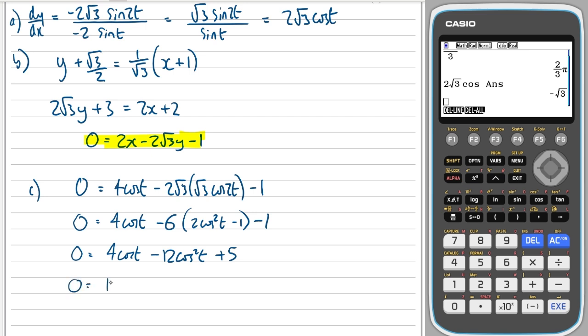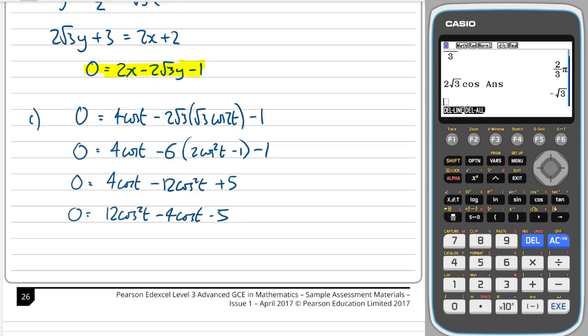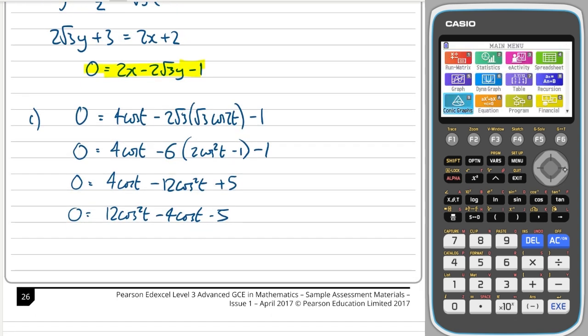This is minus 12cos²(t) and this is going to be plus 6 minus 1 is plus 5. Tidying up a bit more, multiplying through by negative 1 gives me minus 6. I'm going to be lazy and go to my calculator to solve this quadratic.